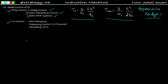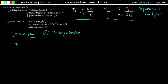In order to control the speed of induction motor, we assume in all speed control methods that the electromagnetic torque equals load torque, and that load torque is constant. We have to assume that load torque is constant.